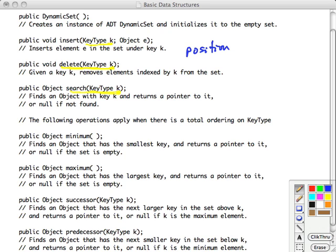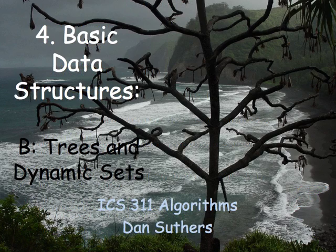And you know, we're going to be returning to this dynamic set ADT later. One thing I'm going to ask you to do with some of your problems is to consider the big O costs, worst case costs, for these various operations given different implementations we've discussed, such as the singly linked and the doubly linked list implementation. Well, that's it for topic four, basic data structures.